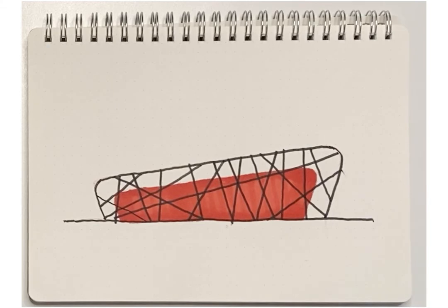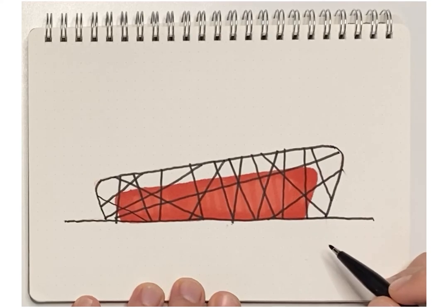Last thing we'll do is we'll outline the red volume that you can see beyond the angled structure.